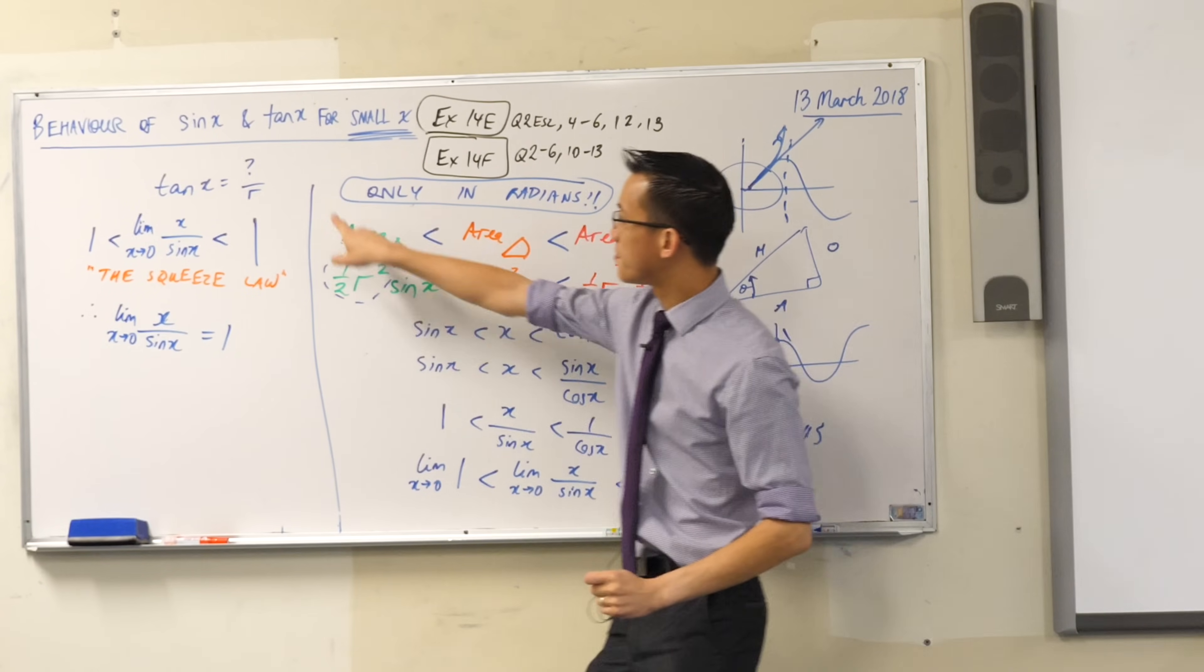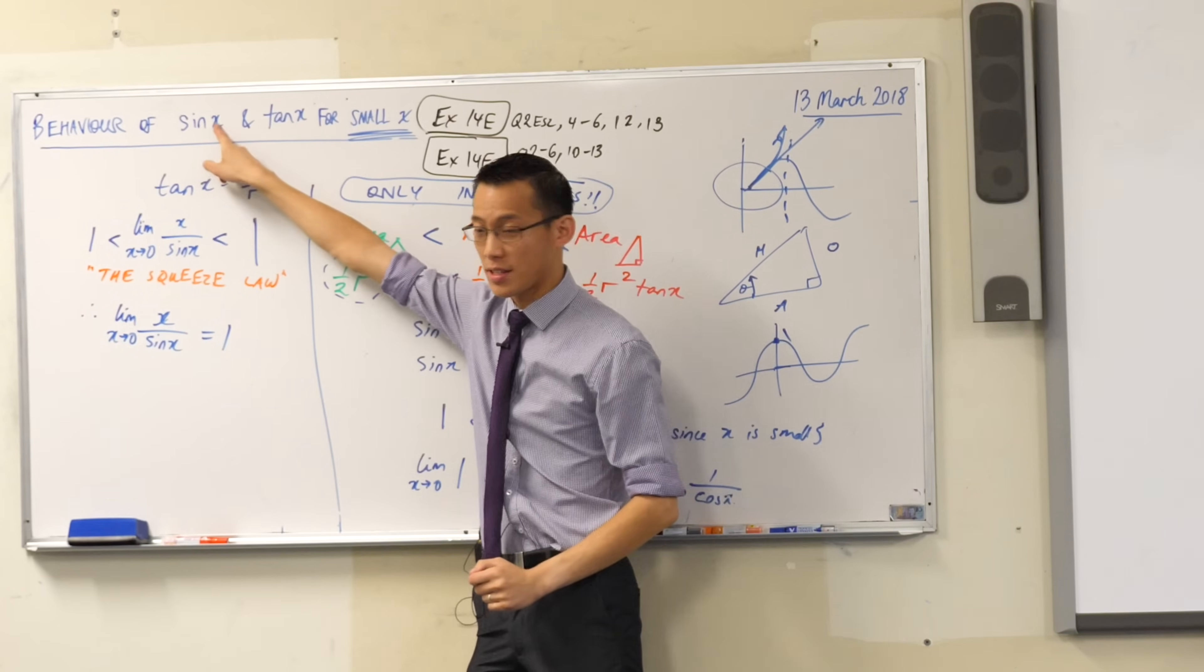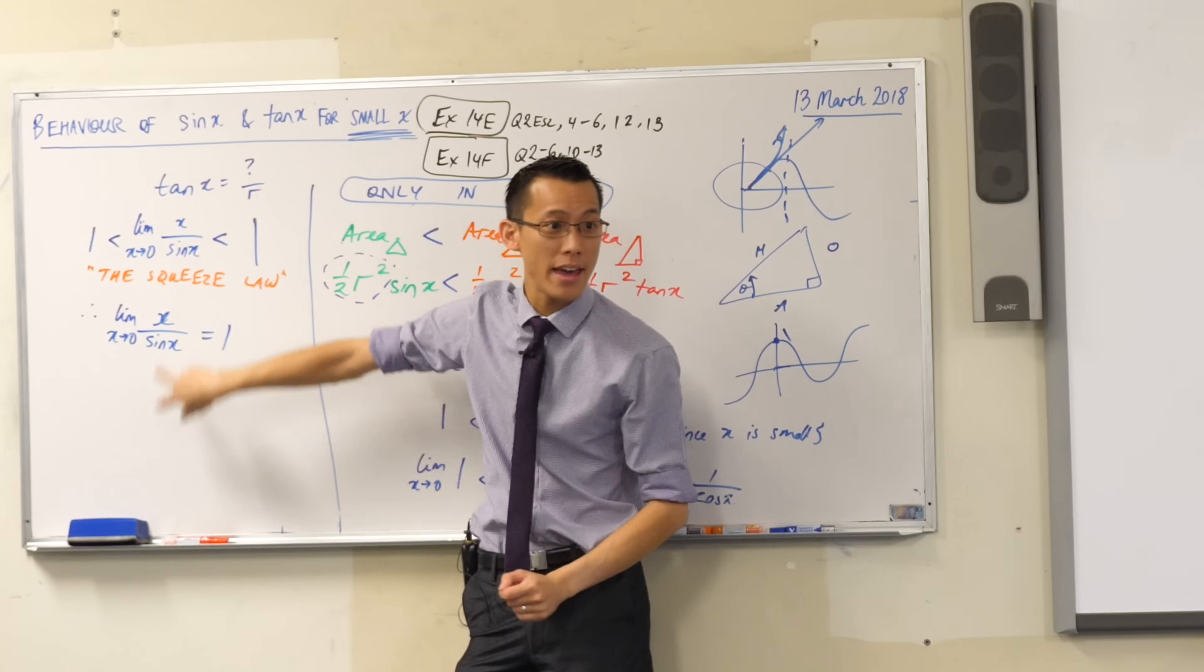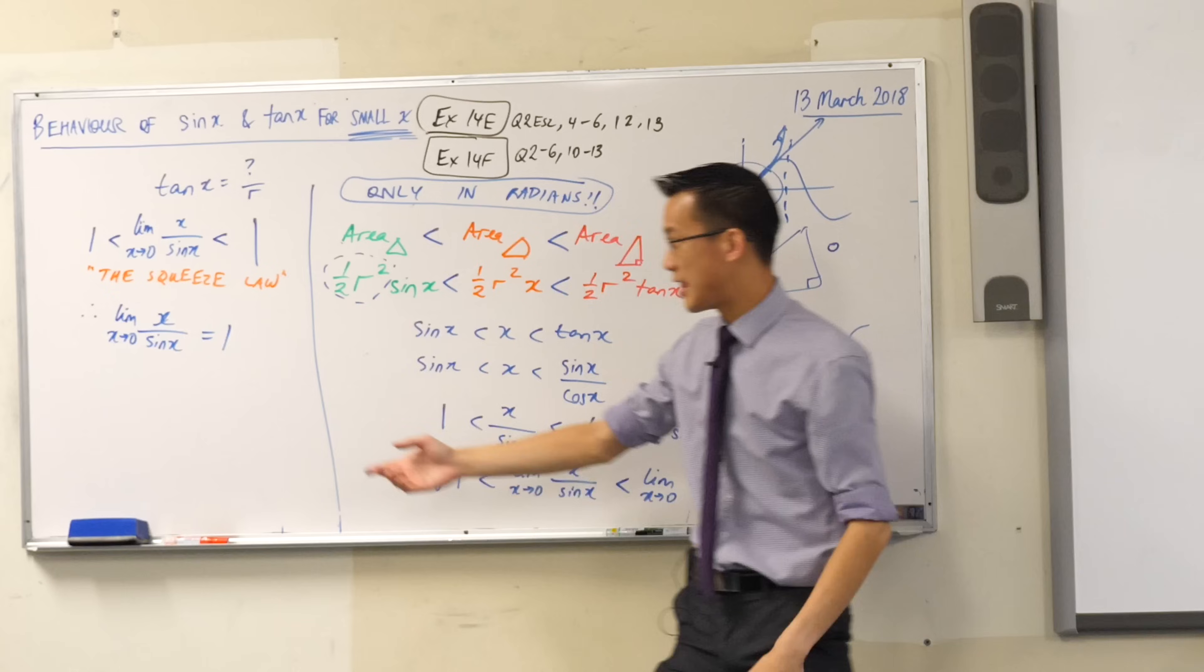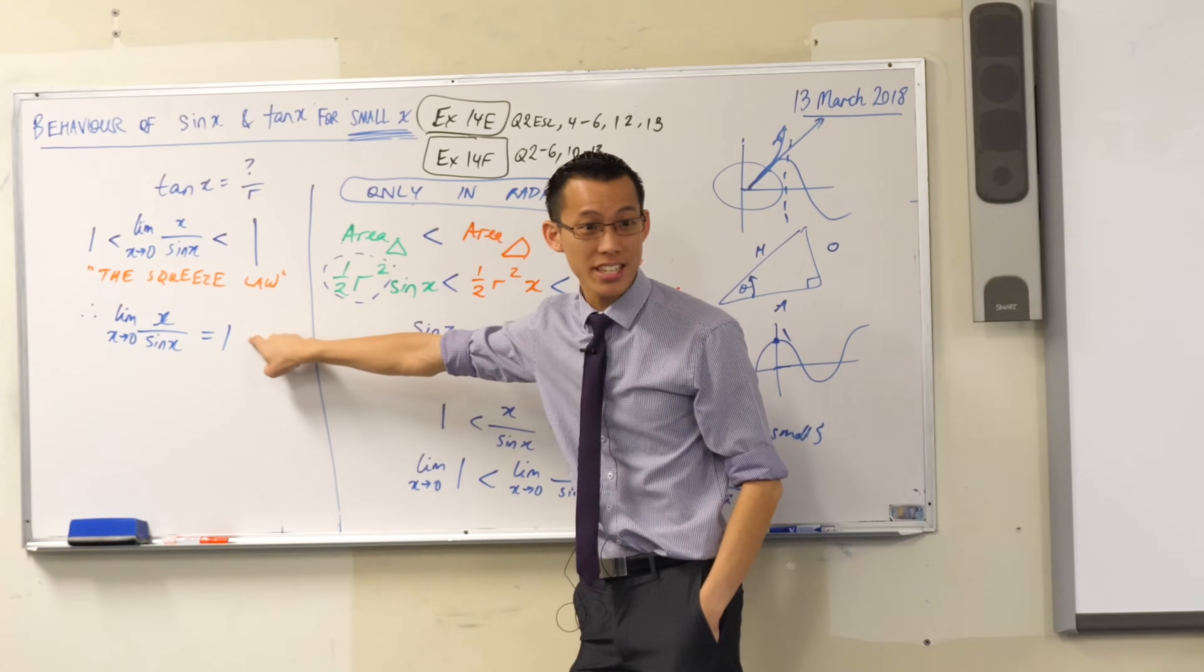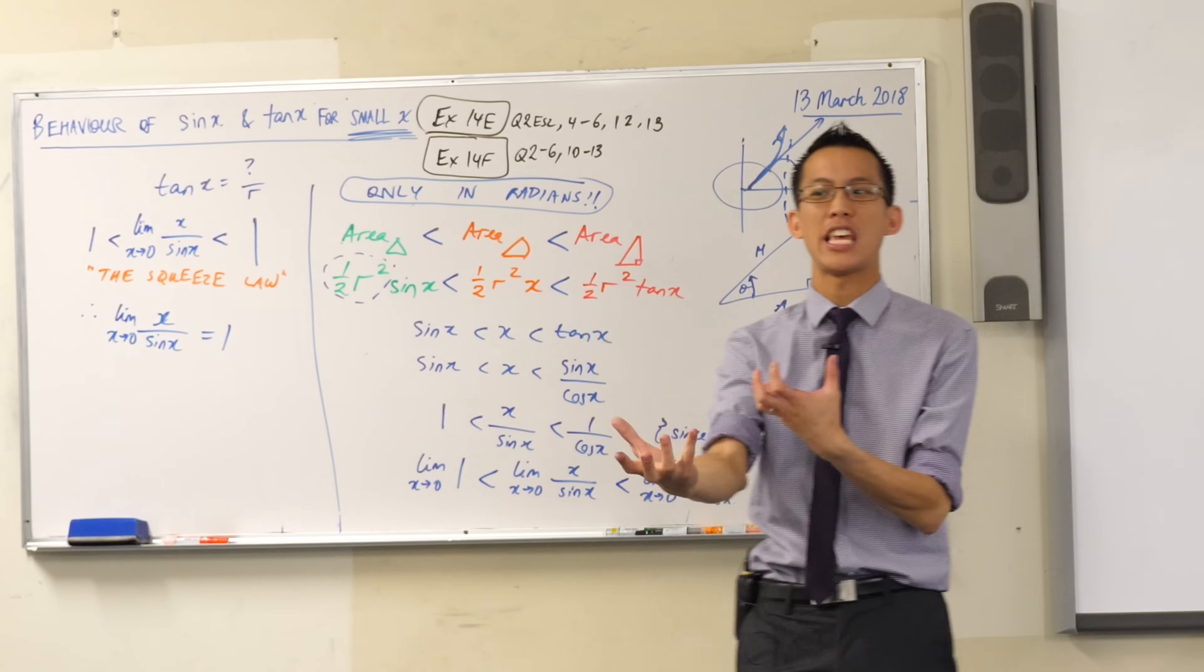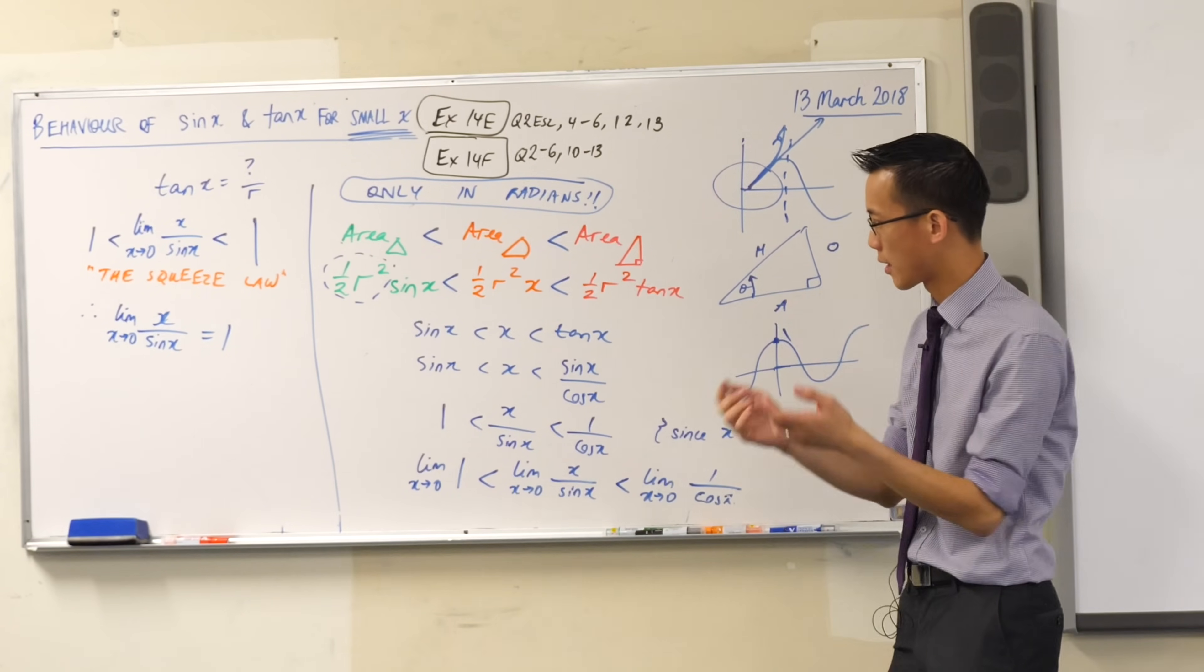Okay, now what does this mean? Well, this shows me that sin x and x, when you take the ratio between these two things, when you compare them, when you divide one by the other, they get closer and closer to being identical. That's what a ratio of 1 means, yeah? If it's 1 to 1, we have the same amount of whatever stuff we're talking about, okay?